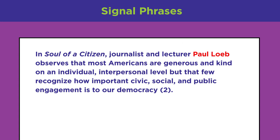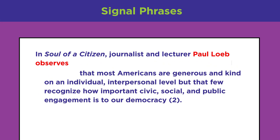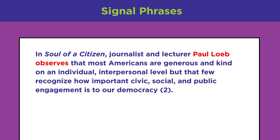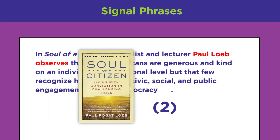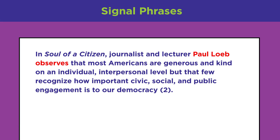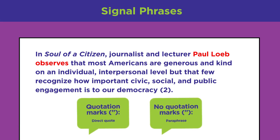The signal phrase includes the author's full name, title of the work, and any credentials of the author. In this example, notice the phrase 'Paul Loeb observes.' Similar to our earlier conversation between Maria and Joe, this phrase signals that the idea that follows belongs to Loeb. The number in parentheses tells the reader that this idea appeared on page two of Loeb's book. Because there are no quotation marks, we know it is a paraphrase and not a direct quote.